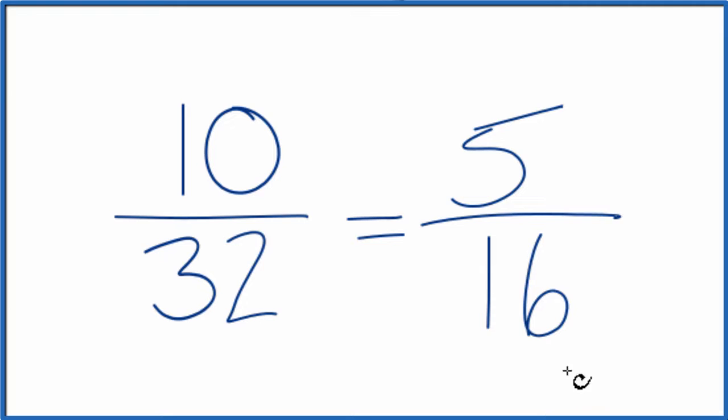I can't reduce this any further. So the common factor for this, the greatest common factor, was 2. We divided 10 by 2, we got 5, 32 by 2, and we got 16. So 5/16, that's the simplified fraction for 10 over 32.